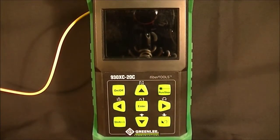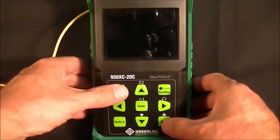Now that the Greenlee Communications 930 XC OTDR is connected to the 500 meter cross connect box, we can turn the OTDR on.